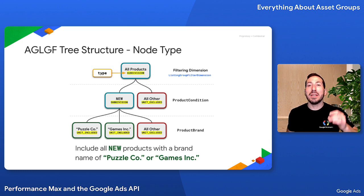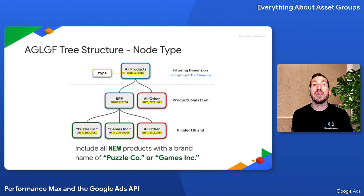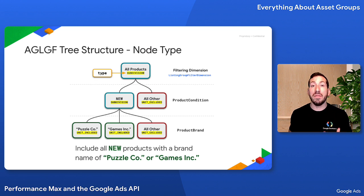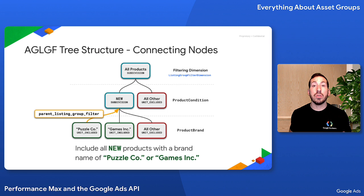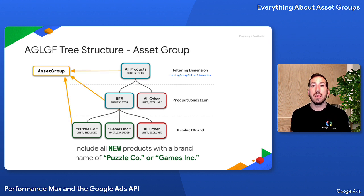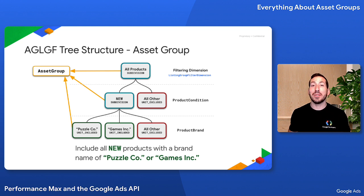Each Asset Group Listing Group filter has a type which defines whether you should include or exclude products that meet the filtering criteria. Alternatively, using a type of Subdivision indicates the Asset Group Listing Group filter should be segmented by another filtering dimension. You link nodes together to form a tree structure in the child nodes using the Parent Listing Group filter field. And you use the Asset Group field to indicate which Asset Group the Asset Group Listing Group filter and entire product partition tree is associated with.